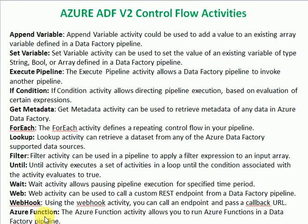That covers all the control flow activities in Azure Data Factory version 2 — append variable, set variable, execute pipeline, if condition, get metadata, for each, lookup, filter, wait, until, web, webhook, and Azure functions. One I missed in the list is Validation: it validates your pipeline before execution for any missing dependencies or errors, and only starts executing if everything is successful.